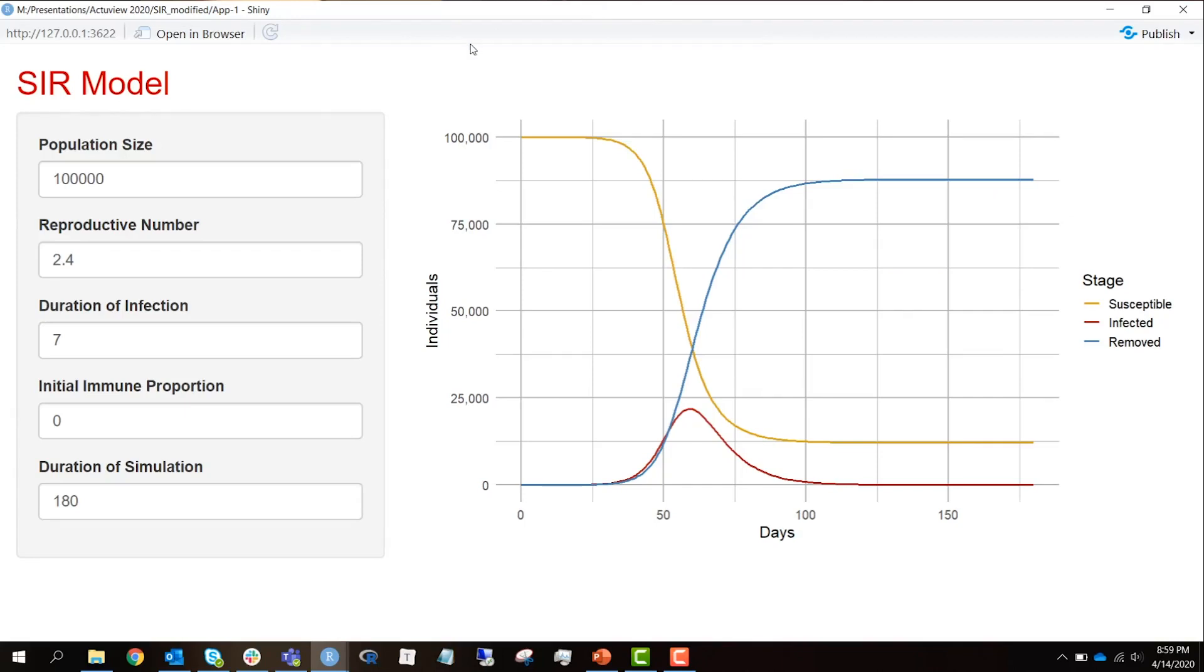This is a Shiny app that I wrote in R Studio and Shiny. We have a hypothetical population of 100,000 individuals. And we're looking at a disease with a reproductive number, an R naught of 2.4, and a duration of infection of seven days. And let's start our population with zero people immune. And let's simulate over 180 days.